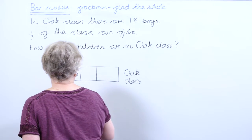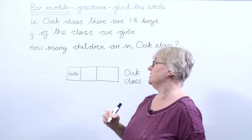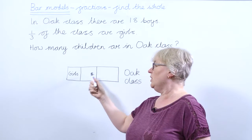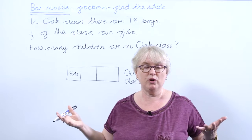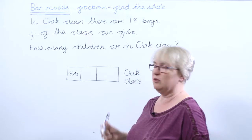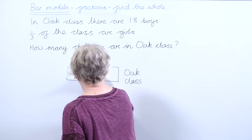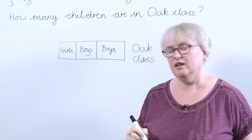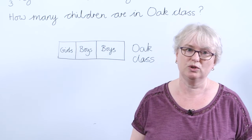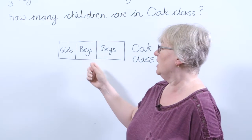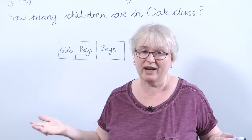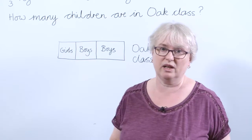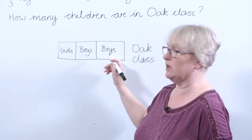Now I'm going to look at who makes up the rest of the class. Obviously we know there are boys, so I'm going to add them onto my bar model — boys here and boys here, representing the whole class. At this point you can ask the children what fraction of the class are boys. Just by looking at the bar they should be able to say two thirds of the class are boys.